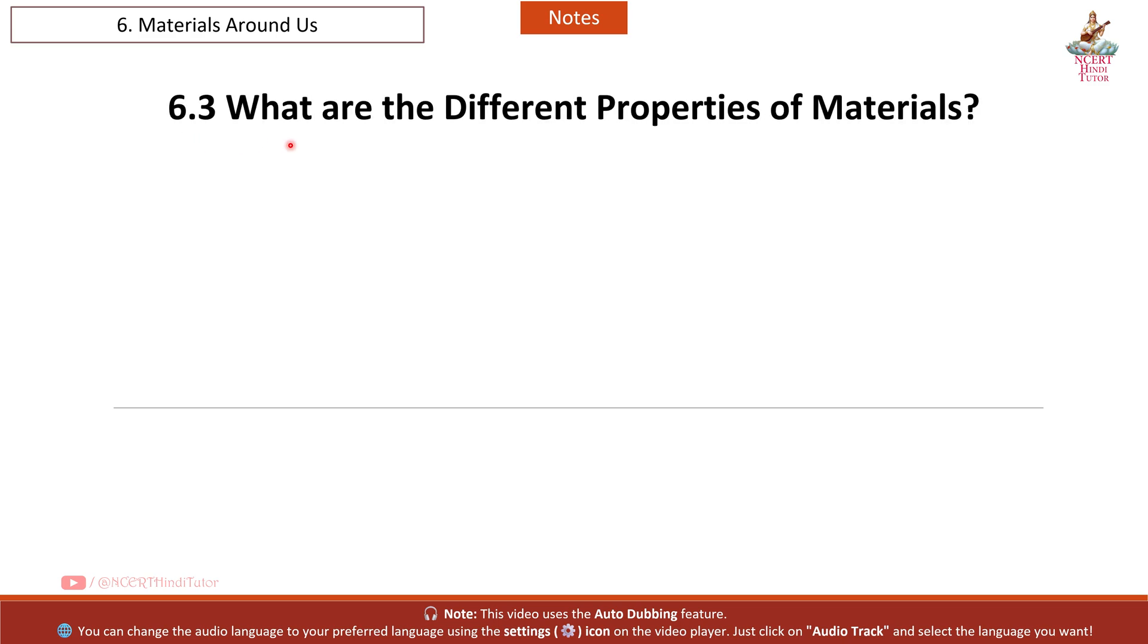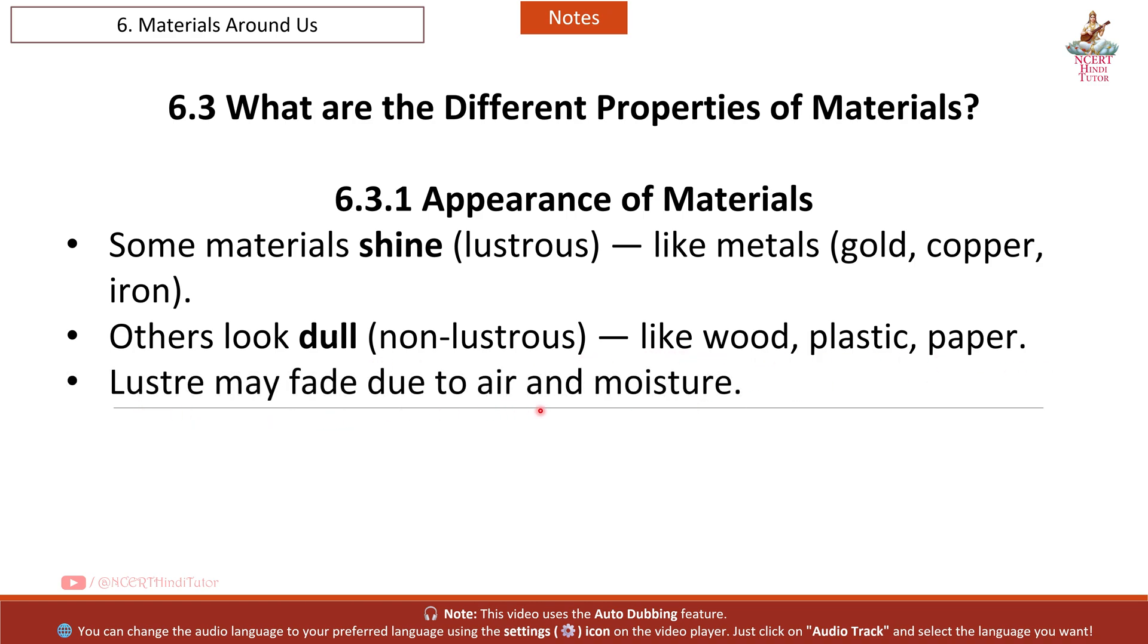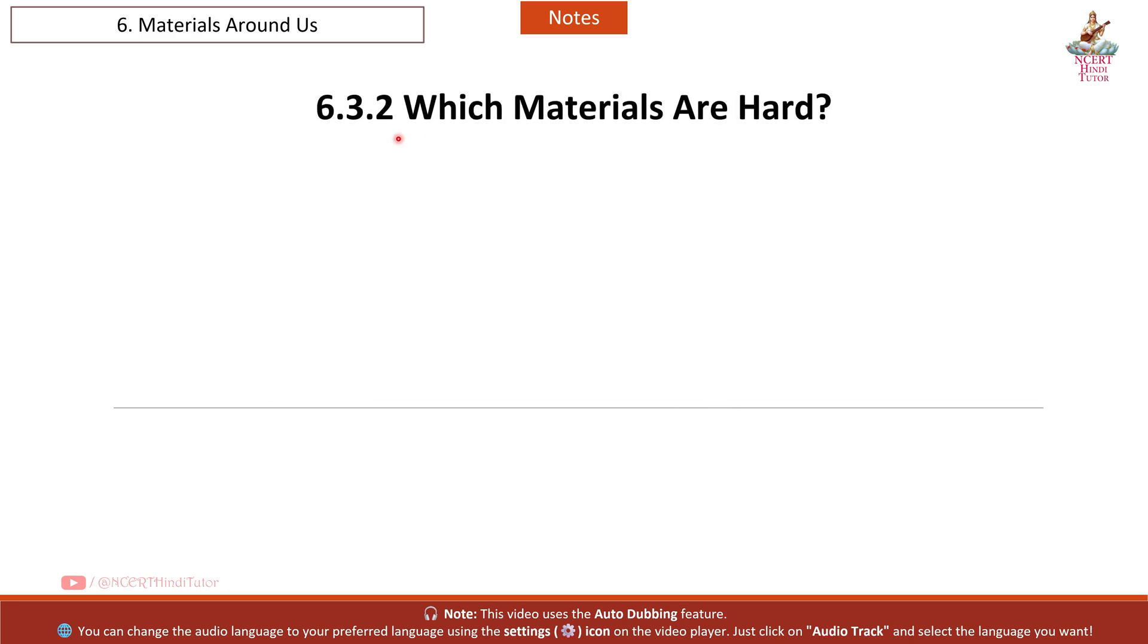6.3 What are the different properties of materials? 6.3.1 Appearance of Materials. Some materials shine, lustrous, like metals: gold, copper, iron. Others look dull, non-lustrous, like wood, plastic, paper. Lustre may fade due to air and moisture.